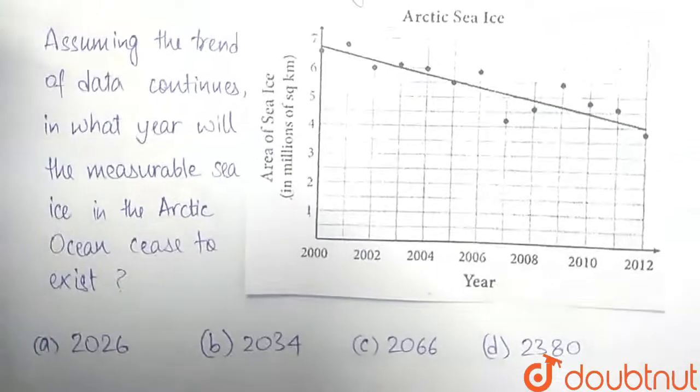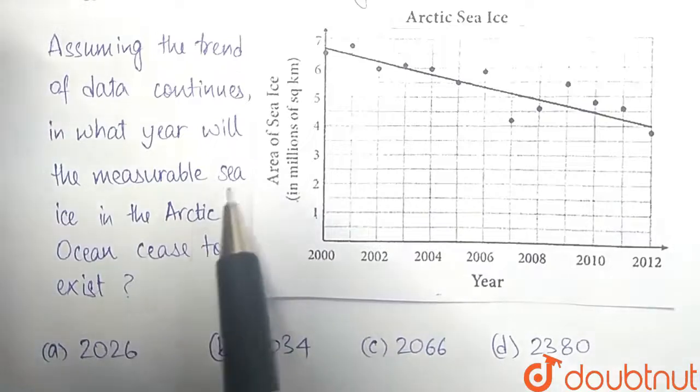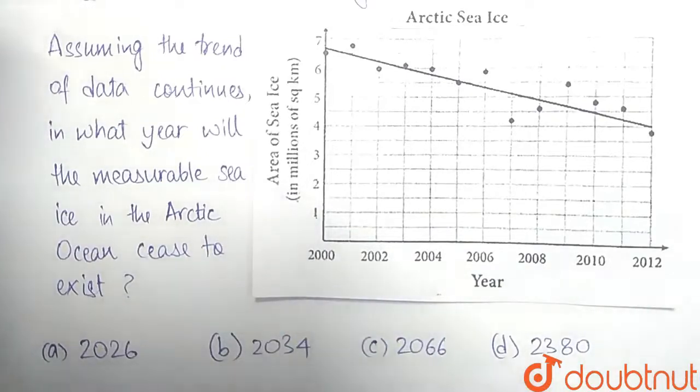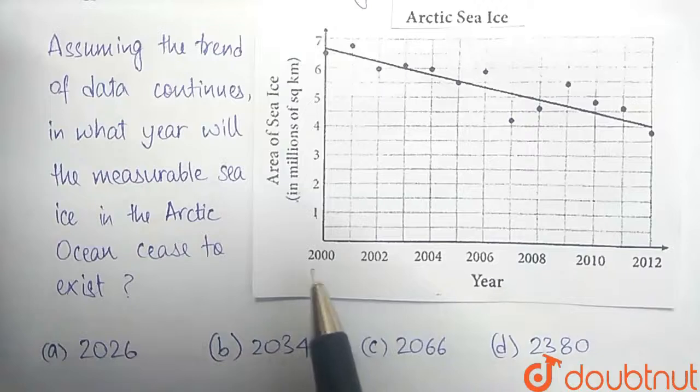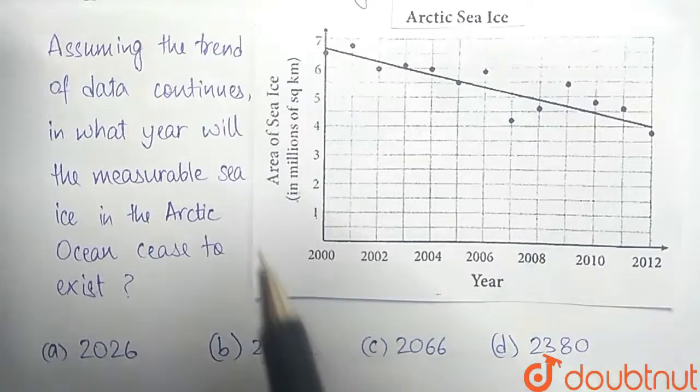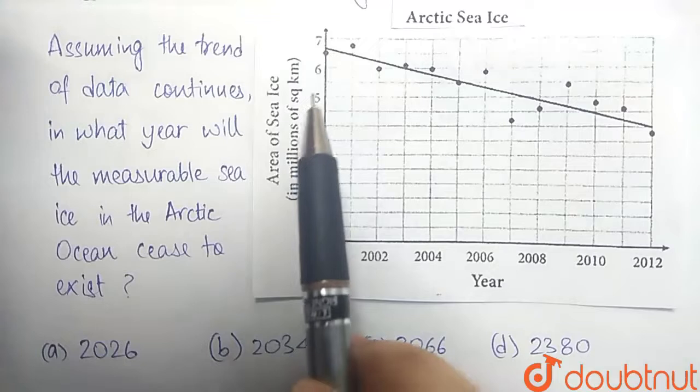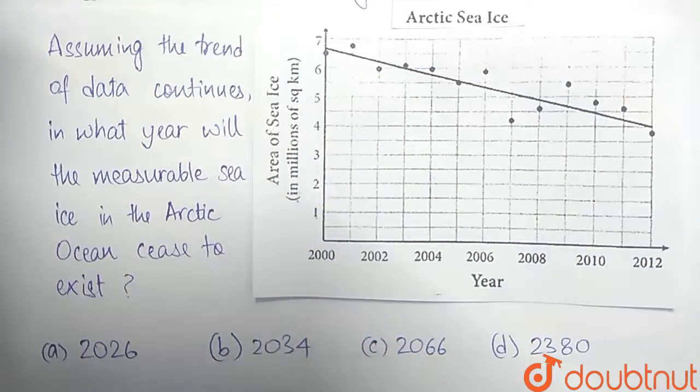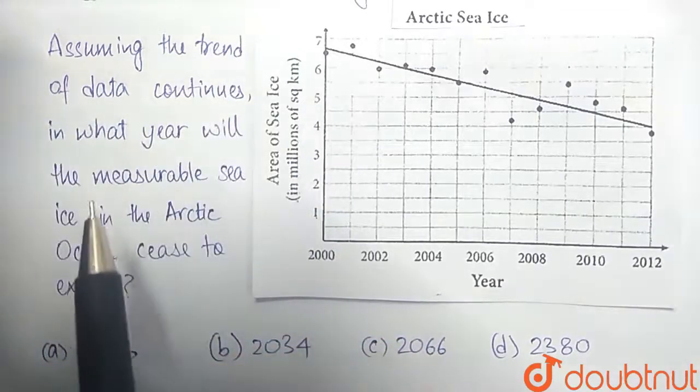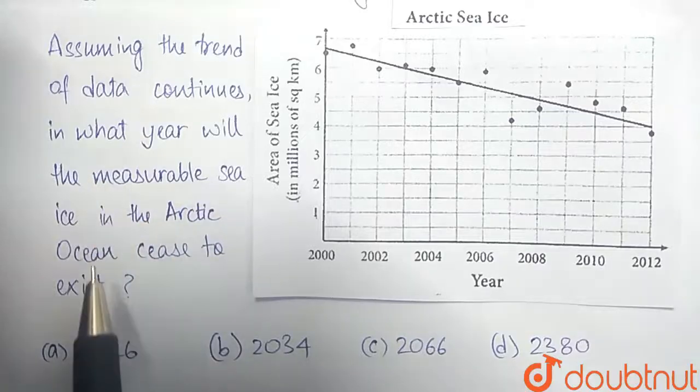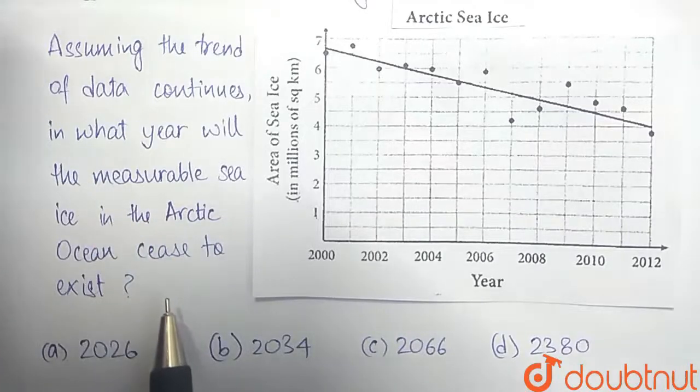So here we have the scatter plot. On the x-axis, we have the year from 2000 to 2012. On the y-axis, we have the area of sea ice in millions of square kilometers. Assuming the trend of data continues, in what year will the measurable sea ice in Arctic ocean cease to exist?